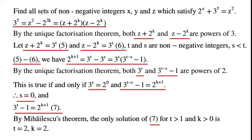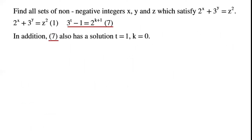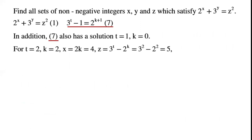By Mihailescu's theorem, the only solution of equation 7 for t greater than 1 and k greater than 0 is t equals 2 and k equals 2. In addition, equation 7 also has solutions t equals 1, k equals 0 and t equals 2, k equals 2, giving x equals 2k equals 4 and z equals 3 to the power of t minus 2 to the power of k equals 3 squared minus 2 squared equals 5.